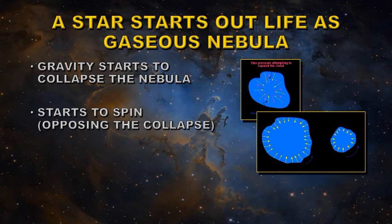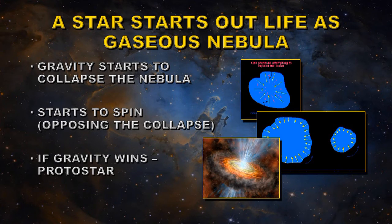And as the gas cloud collapses, the cloud will spin faster and faster, rather like an ice skater pulling in her arms while doing a pirouette. So we have three different forces operating. Gravity pulling the gas cloud together and the pressure in the gas cloud and the centripetal force trying to pull it apart. Now, if gravity wins, we end up with a protostar.